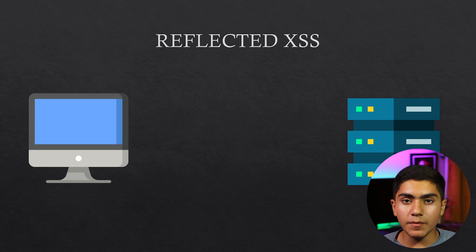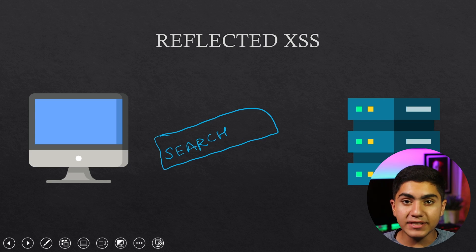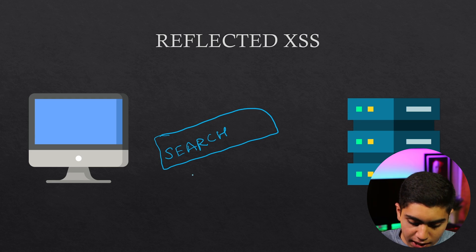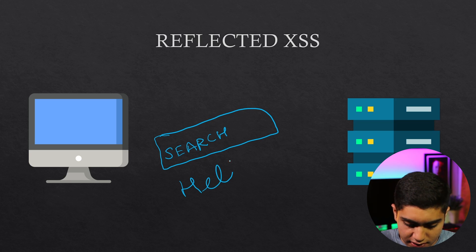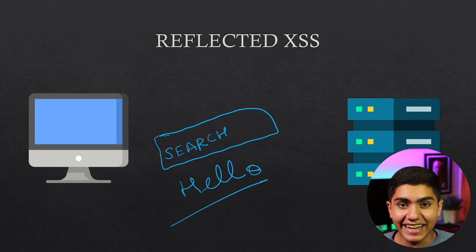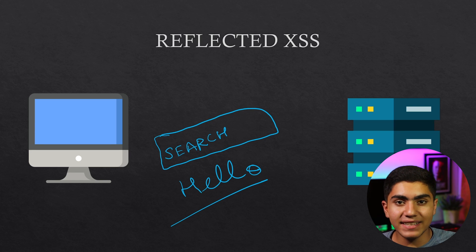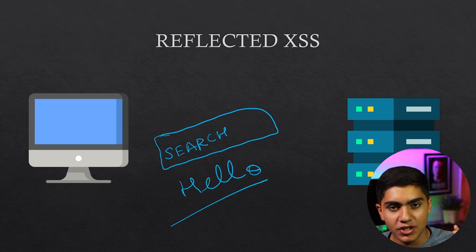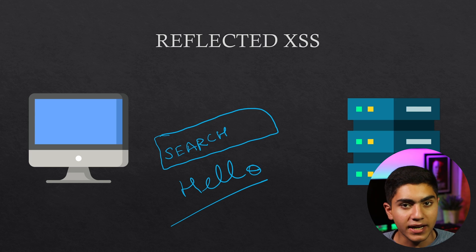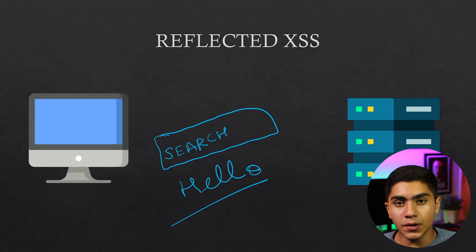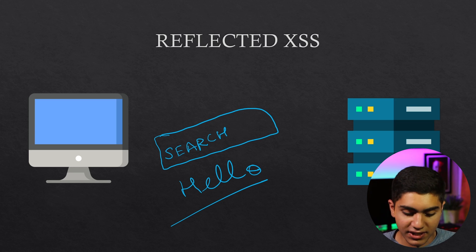Reflected XSS happens when the website has a search bar. When you type anything in it — let's say you type 'hello' — it gets reflected in the webpage. What you type, the website is actually rendering and showing to the user in plain text. Whatever you type in the search bar gets rendered by the database and then shown on the user interface page.